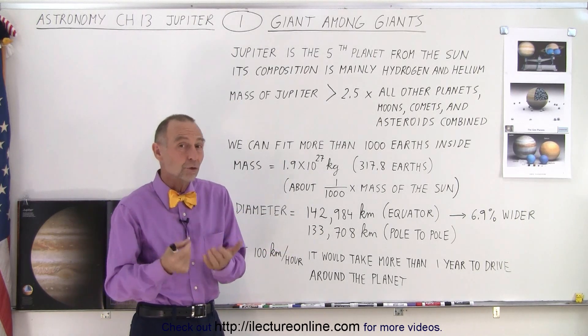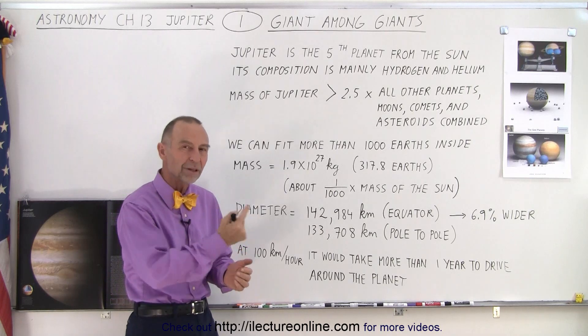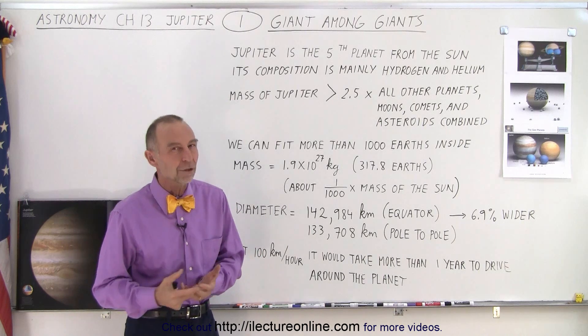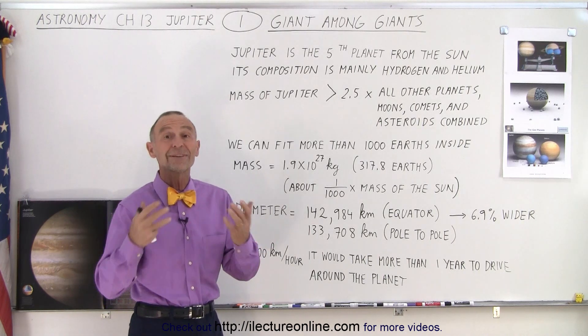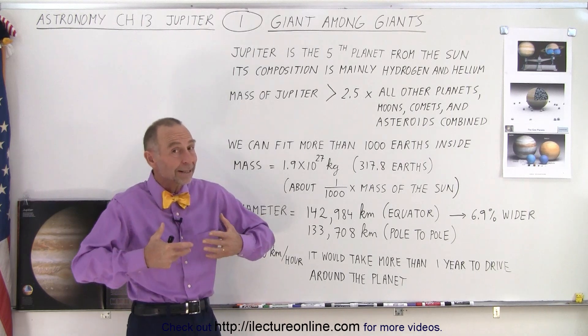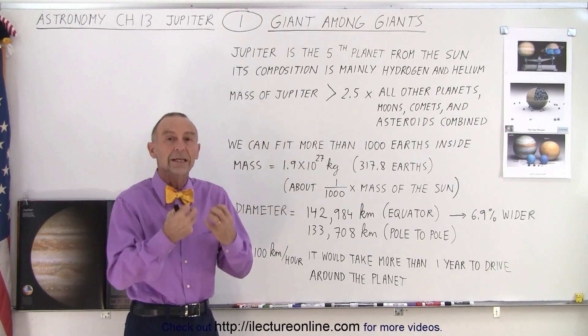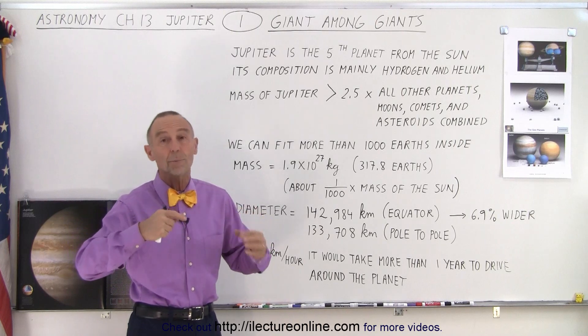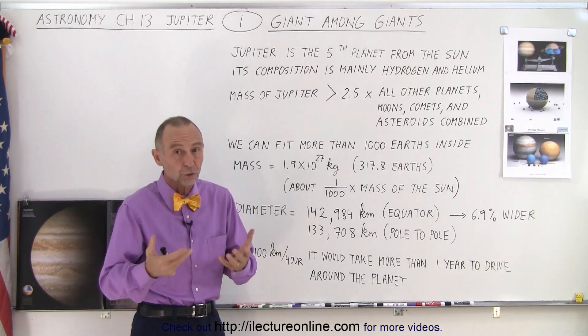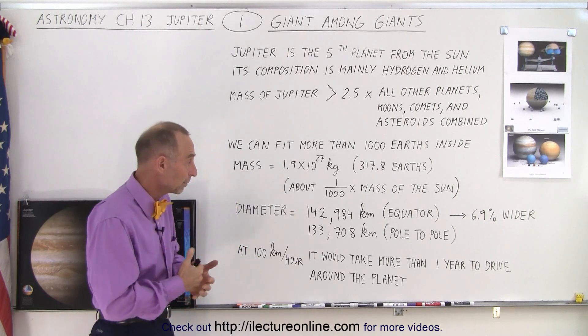The reason for that, well, there's actually two reasons. One of them is that Jupiter spins on its axis really fast. Matter of fact, the fastest of any planet in the solar system, at under 10 hours for one complete rotation. On top of that, it's made out of gas, so it's not as sturdy. And so it tends to bulge out more because of the rapid rotation than if it had been metal or solid rock or something like that, or magma.